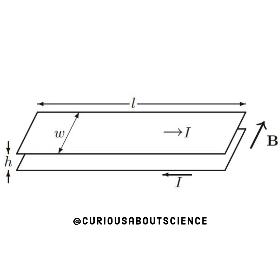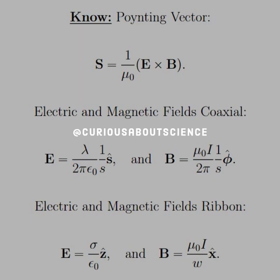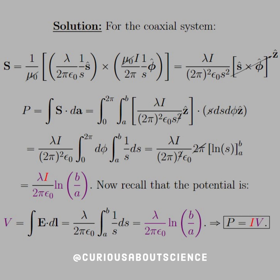So to find what the energy is, what we need to know is the Poynting vector, and the Poynting theorem, which we'll talk about soon. That is S equal to 1 over mu-naught times E cross B. We know that E and B are perpendicular to one another, so we can take their cross product and find another perpendicular vector. The electric and magnetic fields for the coaxial system are these, and the electric and magnetic fields for the ribbon are those. Let's go ahead and take the cross product.